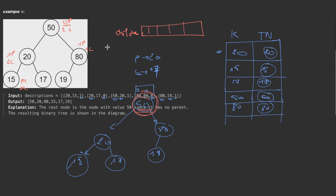Each time we link a child, we increment its count in the children array. At the end, the node whose count is zero is the root. In our example, node 50 ends up with a count of zero. We simply look it up in our map and return it as the root of the tree.